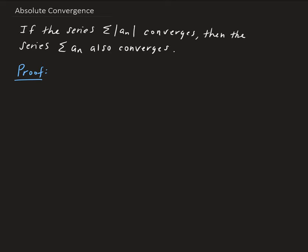This is an if-then type of statement. So what we need to do is assume that the absolute series converges. Then we're going to go through some logical steps and show that the corresponding series also converges.